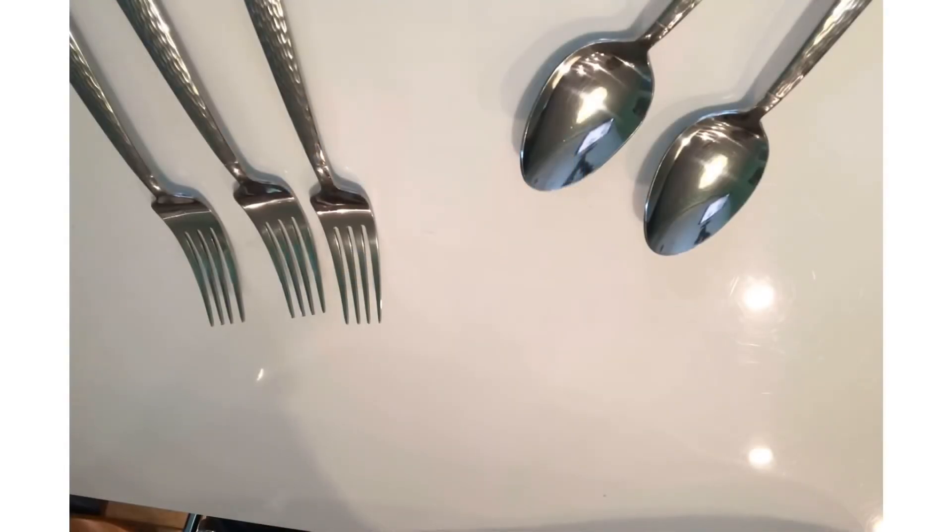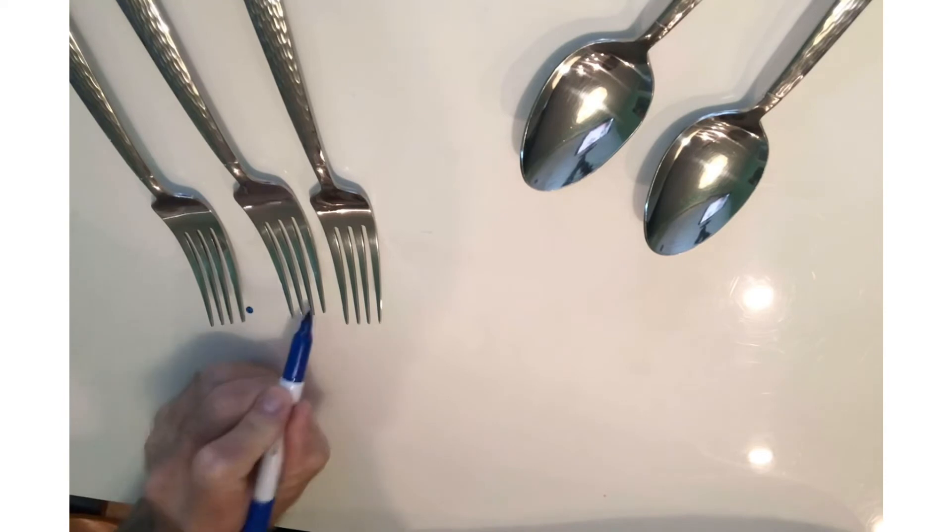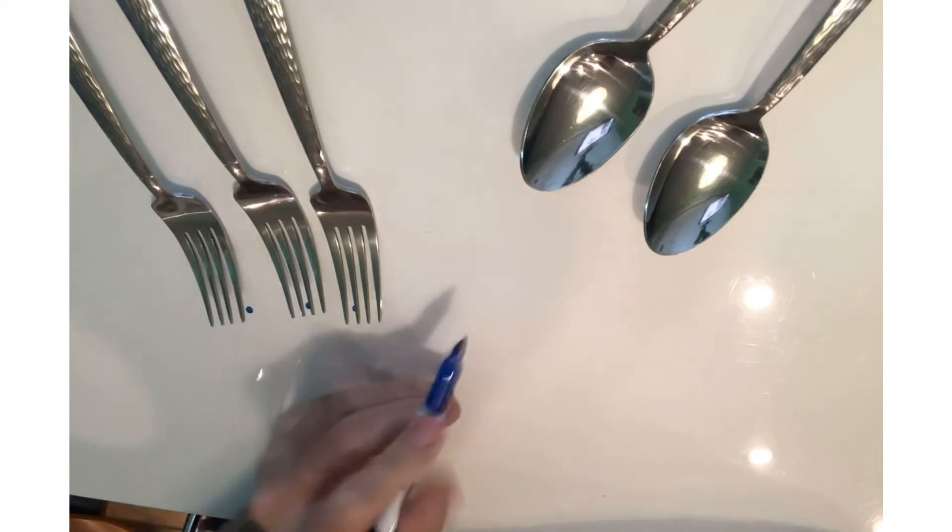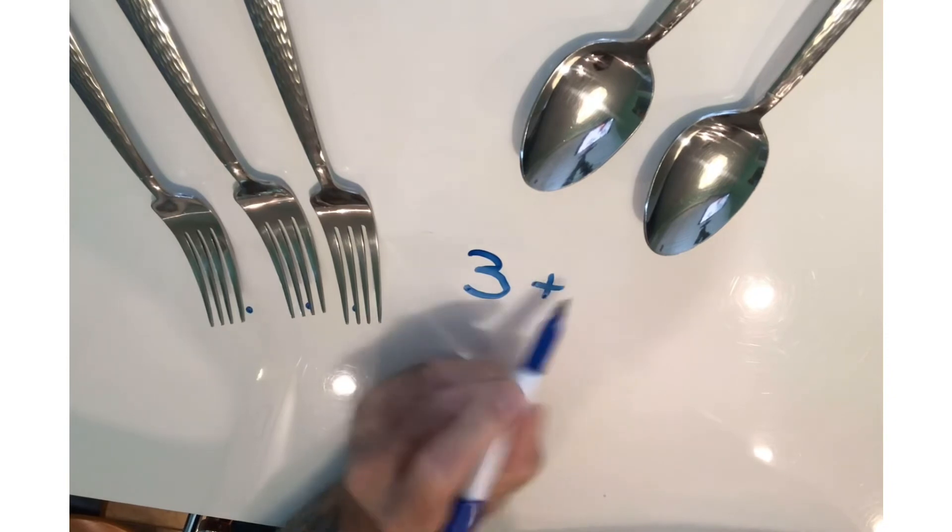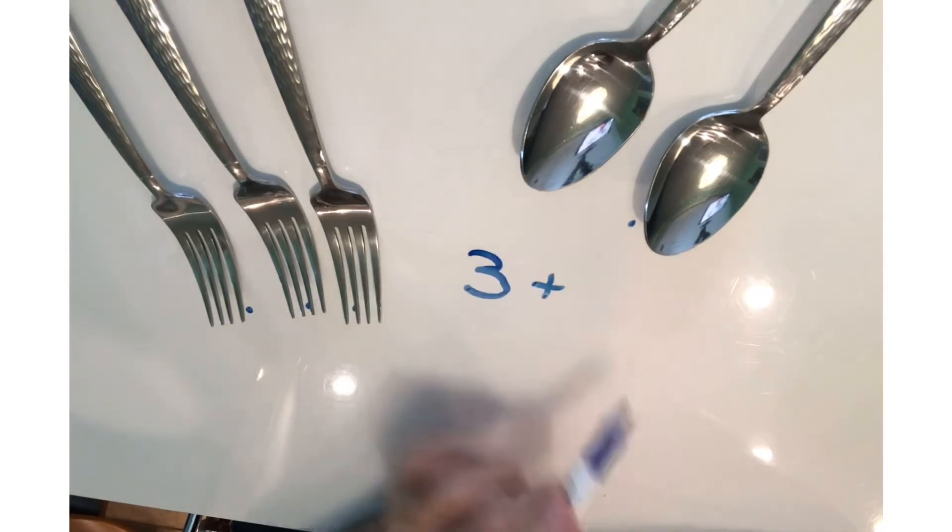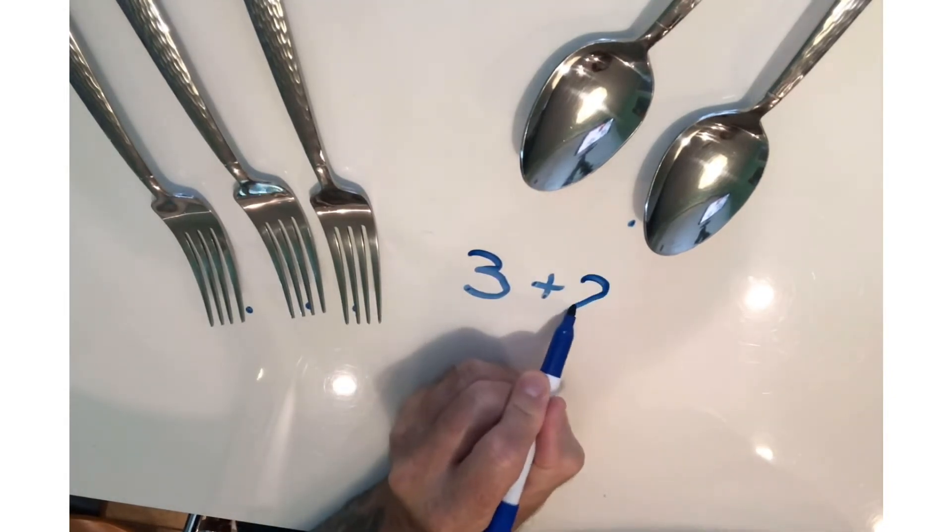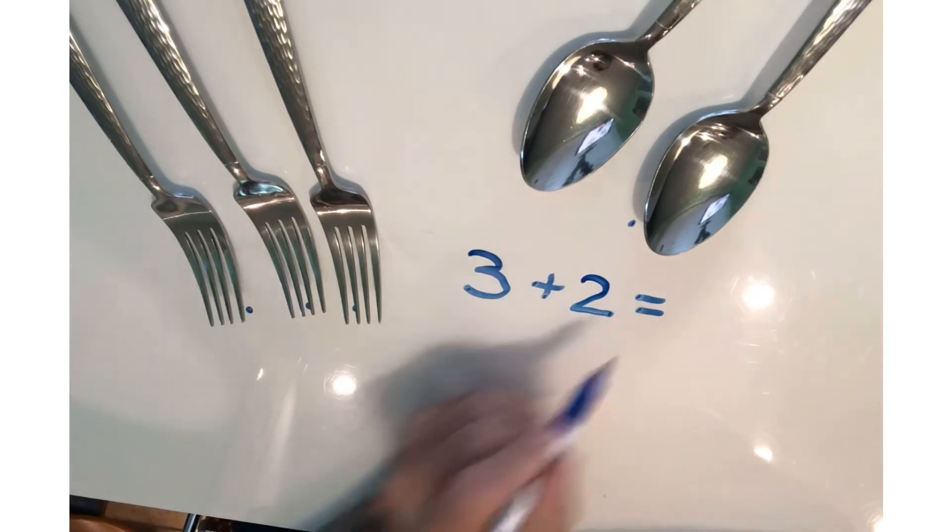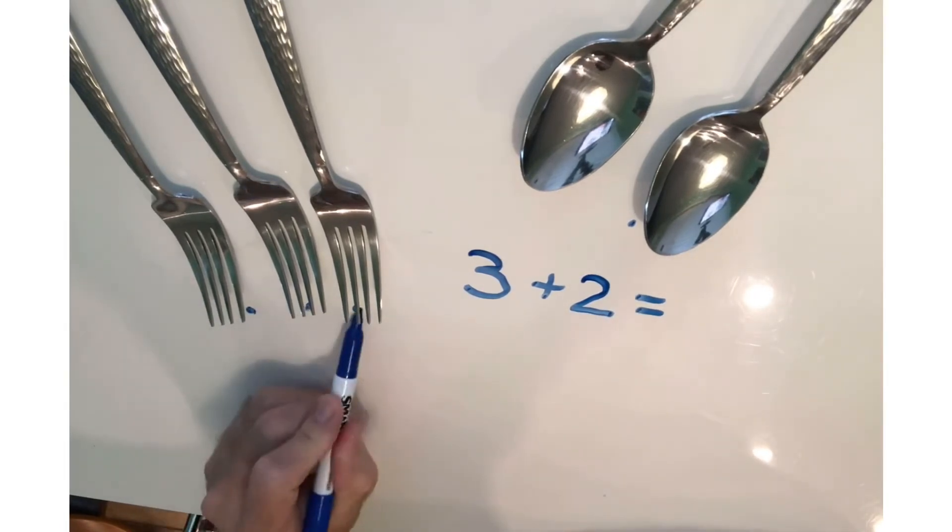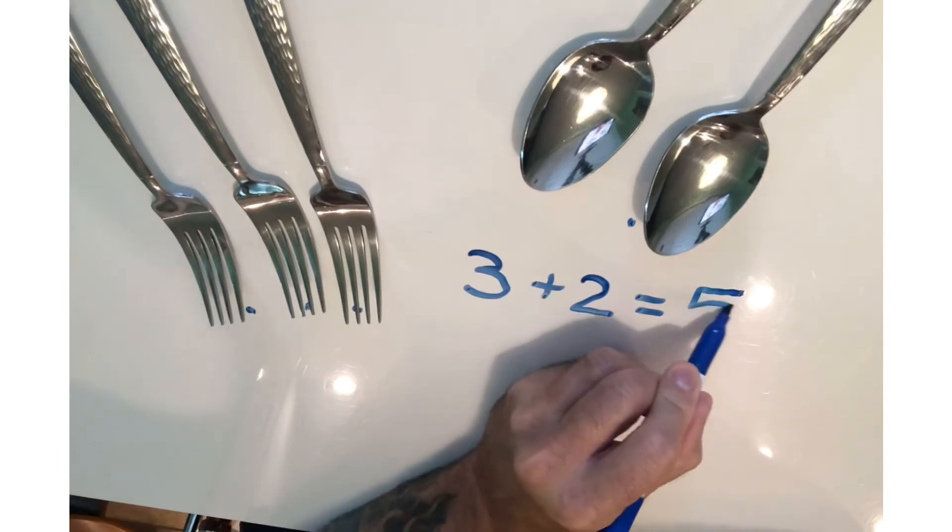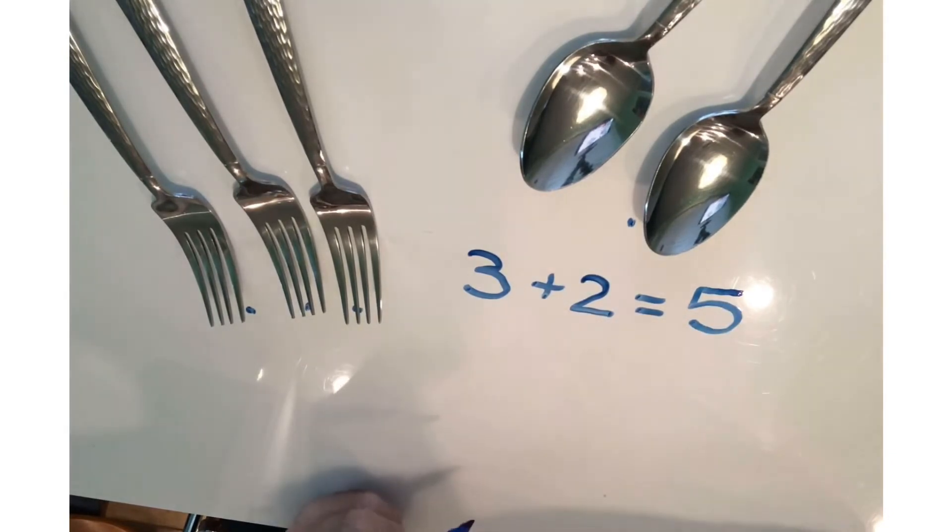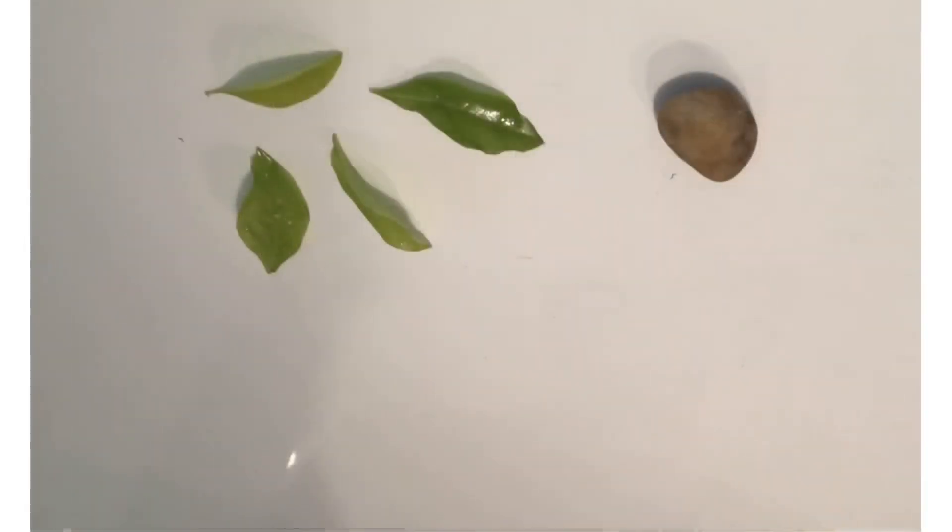Want to get even more creative? Use items around the house. One, two, three forks, plus one, two spoons equals one, two, three, four, five. Five items total. That's a great addition sentence. Don't stop there. Keep going.